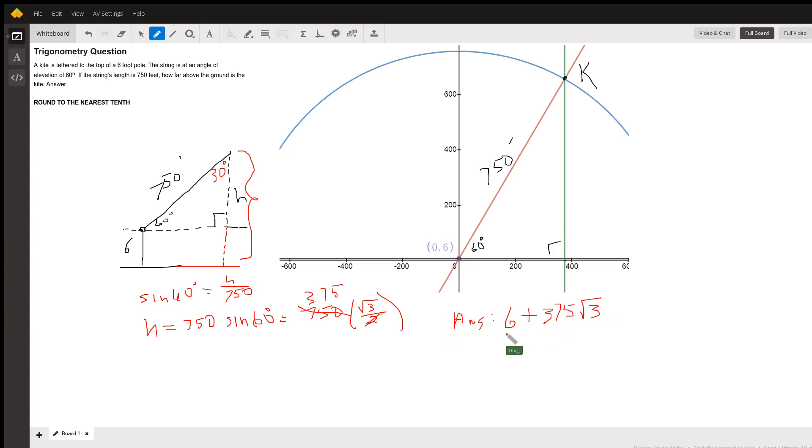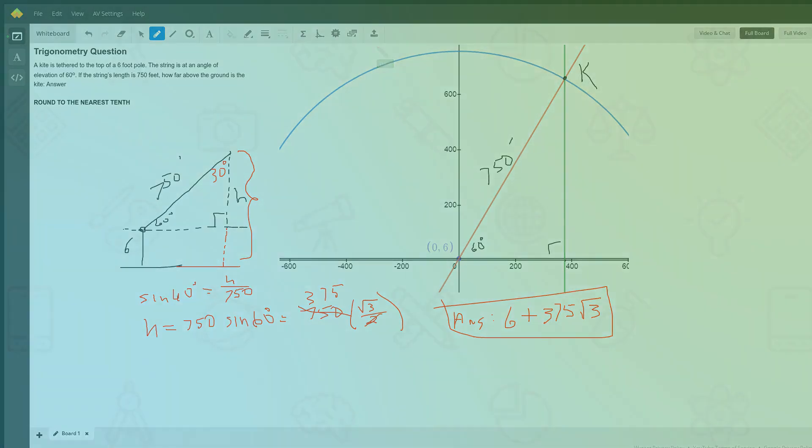Get a decimal approximation for that and you've got the distance the kite is above the ground. Okay, there you go, hope that helped, and if you have any questions, post a comment.